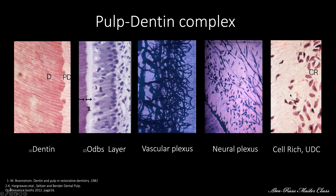And then the core of the pulp — you will have the cell-rich zone saturated with all kinds of cells, specifically fibroblasts and undifferentiated mesenchymal cells.